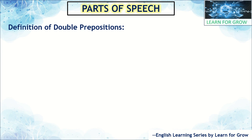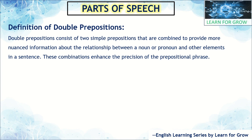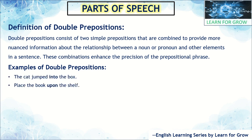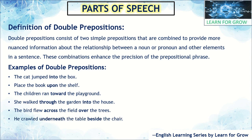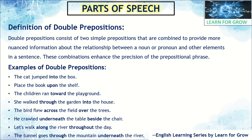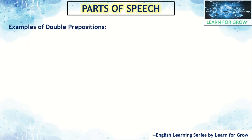Next is double prepositions. Double prepositions consist of two simple prepositions combined to provide more nuanced information about the relationship between a noun or pronoun and other elements in a sentence. These combinations enhance the precision of the prepositional phrase. Examples: 'The cat jumped into the box,' 'Place the book up upon the shelf,' 'The children ran toward the playground,' 'She walked through the garden into the house,' 'The bird flew across the field over the trees,' 'He crawled underneath the table beside the chair,' 'Let's walk along the river throughout the day,' 'The tunnel goes through the mountain underneath the river.'